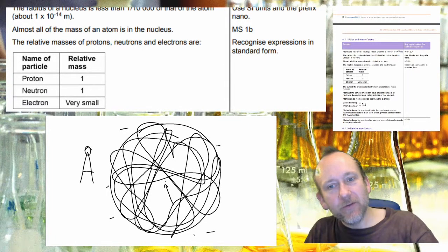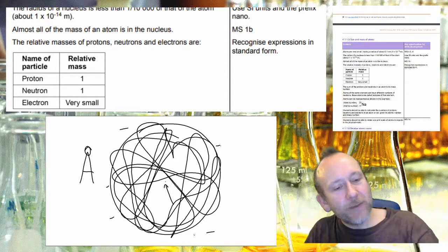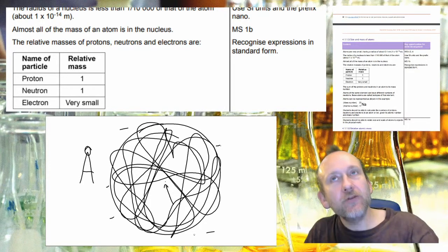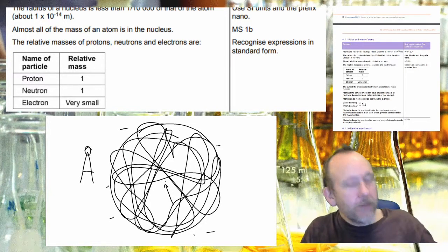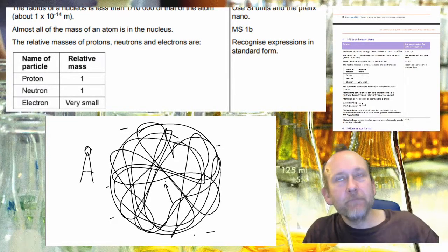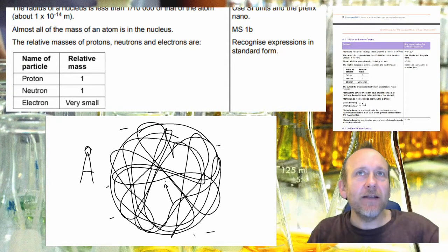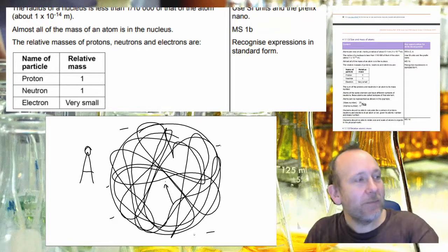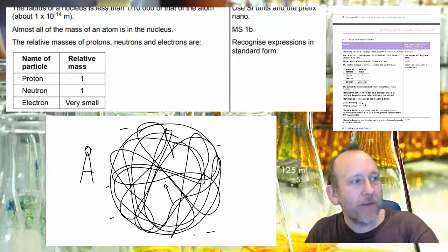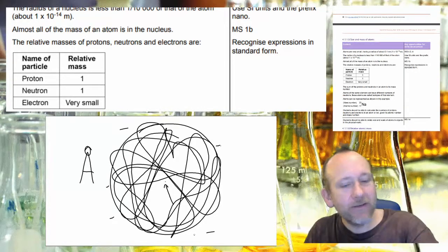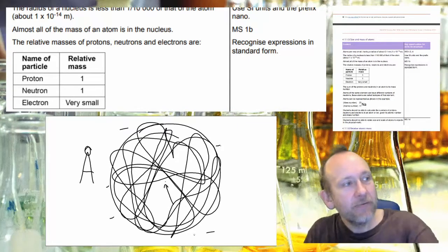This explains for example why when two atoms or when two bits of matter come together you can't just press your finger through the table or through a book, because even though it's pretty much empty space almost all of the mass of an atom is in the nucleus.